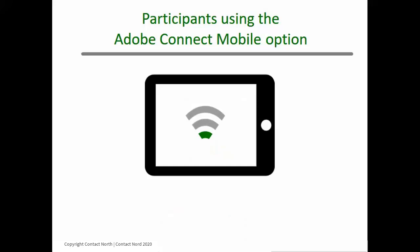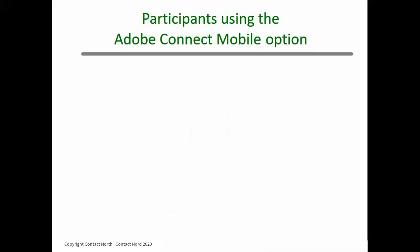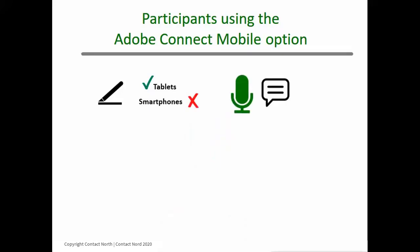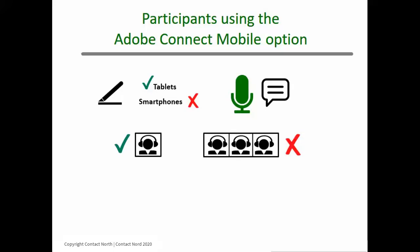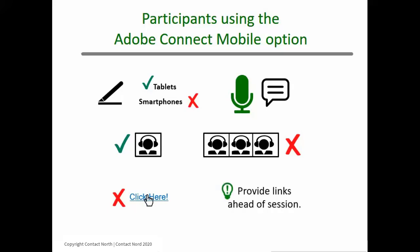While providing great flexibility, the mobile option does have some limitations. Tablet users will have access to markup or draw tools, but smartphone users will not. Instead, encourage those participants to contribute by microphone or through text chat. Mobile users can broadcast their webcam video, but will only see other webcams one at a time. Mobile users cannot tap on an embedded link nor a link pasted into a chat message, so consider providing these types of resources ahead of time outside of the session.